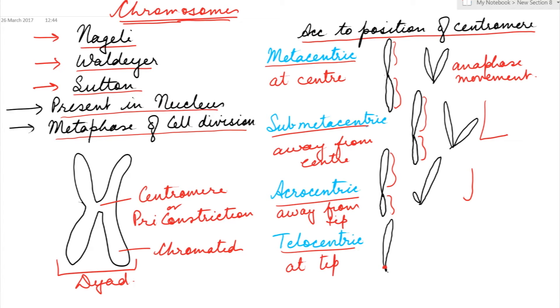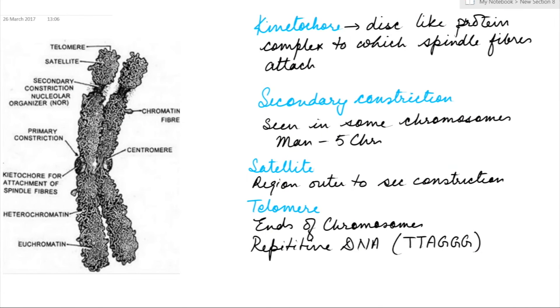During anaphase movement, I-shaped chromosomes are seen. At the centromere are present two disc-shaped protein complexes called kinetochores, to which spindle fibers attach during cell division. They help in chromosomal movement during cell division.